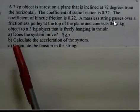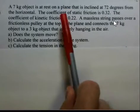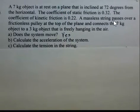We have a 7 kilogram object at rest on a plane with an inclination angle of 72 degrees from the horizontal. The static friction coefficient is 0.32, and as typical, the coefficient of kinetic friction is smaller, 0.22.